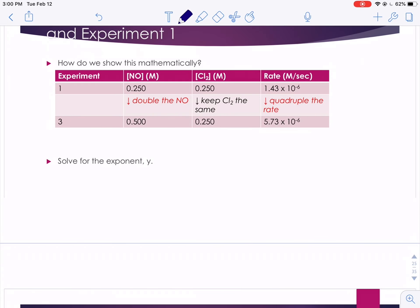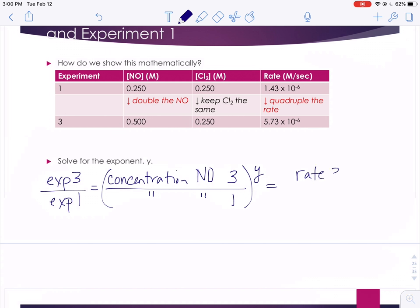So how are we going to show this mathematically? Well, just like before, this time we're going to compare experiment 3 to experiment 1. When we do so, we're going to look at the concentration of our nitrogen monoxide in experiment 3 over the concentration of nitrogen monoxide in experiment 1. We're going to raise that to some exponent y, the order with respect to nitrogen monoxide, and that's going to equal the rate for trial 3 over the rate for trial 1.